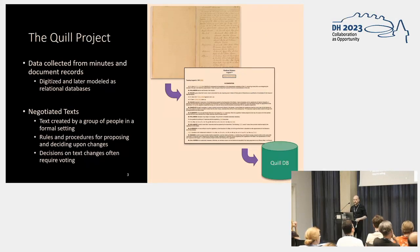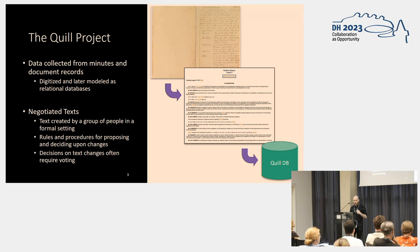All this data is collected from minutes and document records. There is a whole process of scanning the physical documents, transforming them to actual text, and then converting those to metadata in a relational database containing information regarding all events, people, committees, and keywords. The negotiated texts themselves are the result of formal processes with well-established rules for proposing and deciding changes — such as drafting constitutions, treaties, or legislation — and most of these cases include voting.